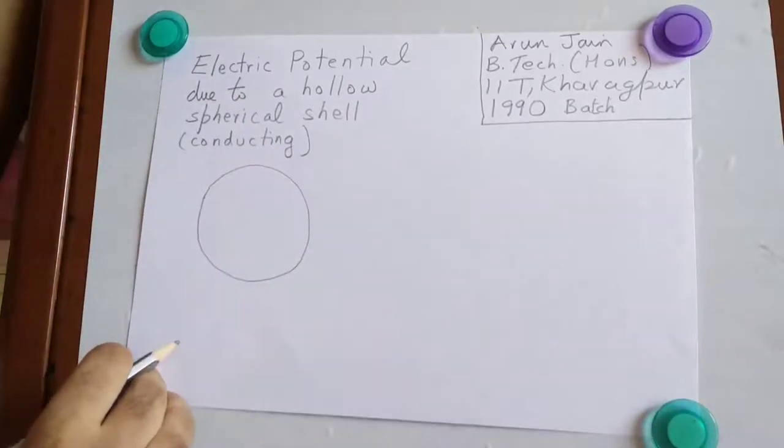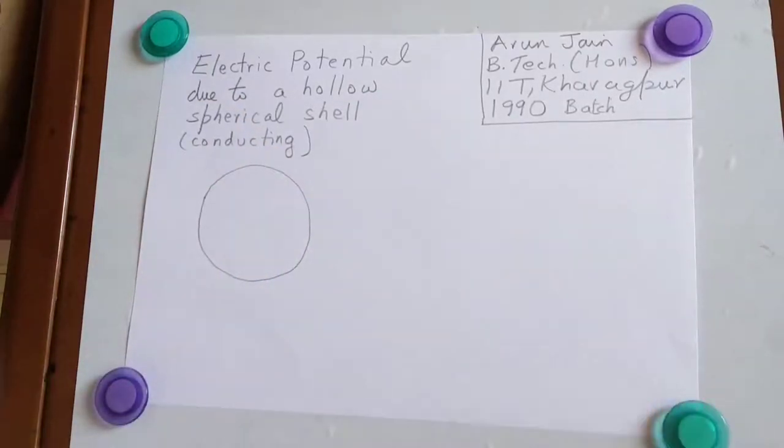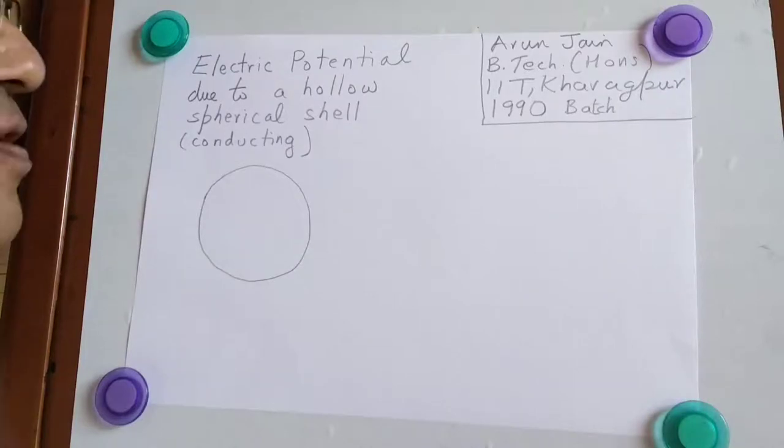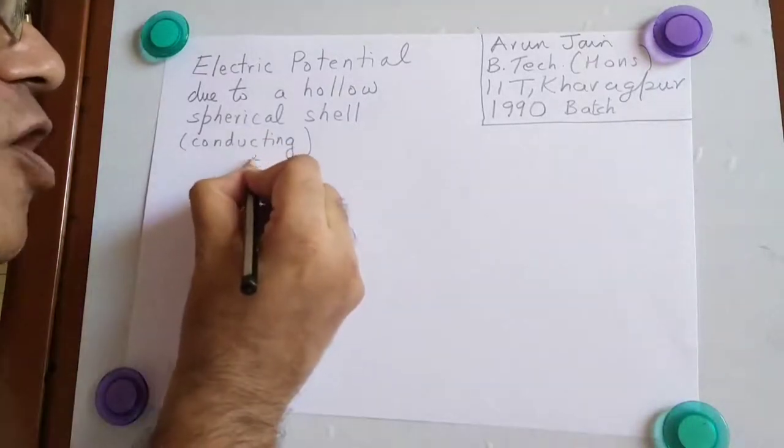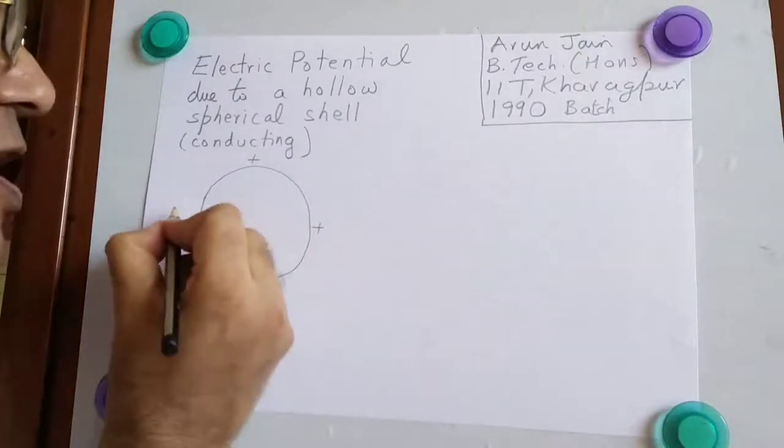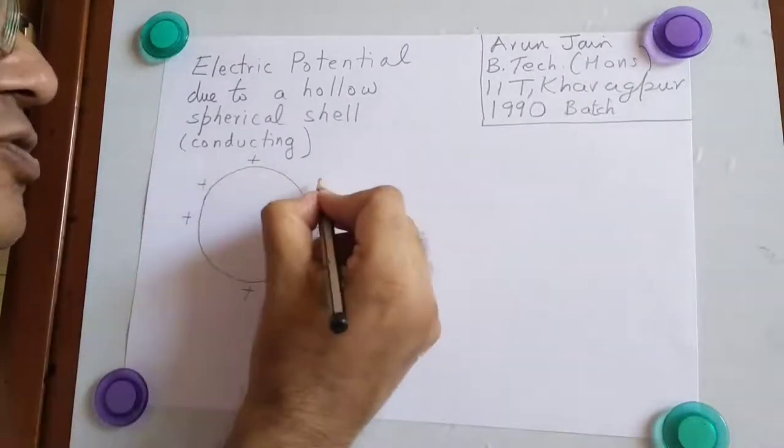If it is a conductor, charge automatically gets uniformly distributed. We have got a spherical conductor, all charge goes to the outer surface and charge is uniformly distributed.